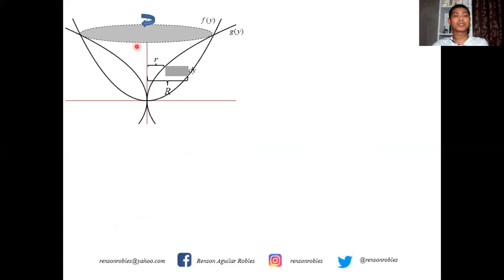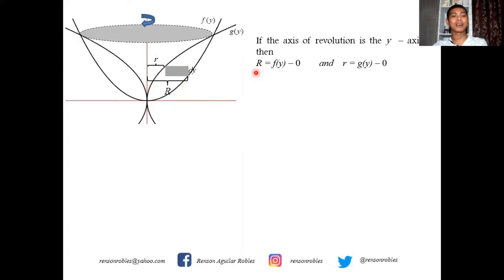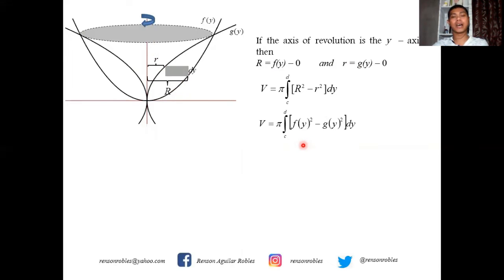If the axis of revolution is vertical, the element chosen is horizontal, perpendicular to the vertical axis. The distance from the axis of revolution to the nearest part of the region is small r, and to the farthest part is capital R. If this is the y-axis, then R = f(y) − 0 and r = g(y) − 0, giving: V = π ∫[C to D] [f(y)² − g(y)²] dy.